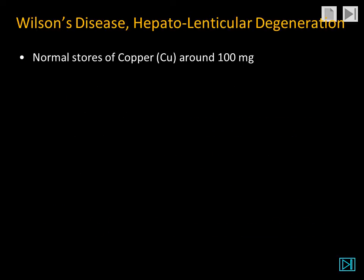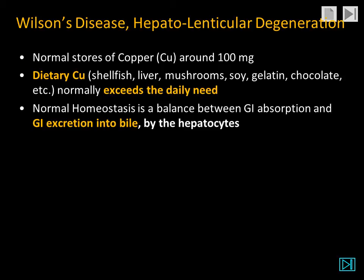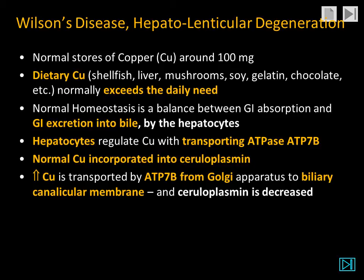Wilson's disease is related to abnormal copper metabolism. Normal stores of copper are around 100 milligrams throughout the body. Dietary copper comes primarily from shellfish, liver, mushroom, soy, gelatin, and chocolate, and normally exceeds the daily requirements. Normal homeostasis is a balance between gastrointestinal absorption and gastrointestinal excretion into bile, which is formed by the hepatocytes. The hepatocytes regulate copper with the transporting ATPase, ATP7b. Normal copper is incorporated into ceruloplasmin. Elevated copper is transported by ATP7b from the Golgi apparatus to the biliary canalicular membrane, where it is excreted into the bile.